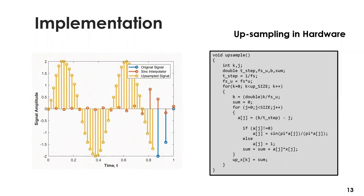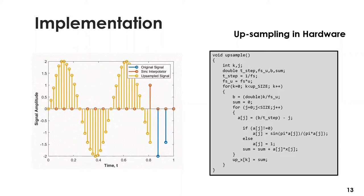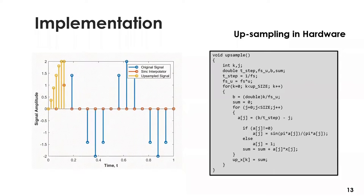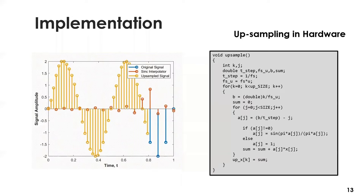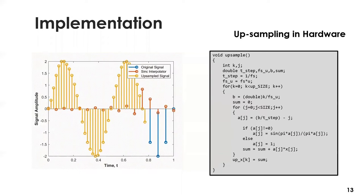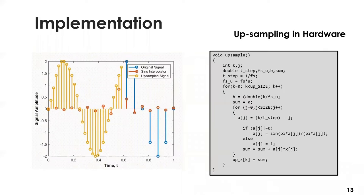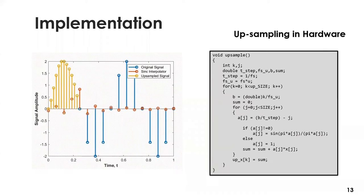We will now discuss how resampling has been implemented in our project, demonstrating it using a short sinusoidal signal. Starting with upsampling, the original signal is upsampled by a factor of 3, so two new samples are interpolated between any two successive samples. This interpolation is done through the sinc function, which performs a weighted averaging of the original signal at the new sampling instances. The amplitude at the original sampling instances remains the same, as the sinc becomes zero everywhere else but the sampling instance.